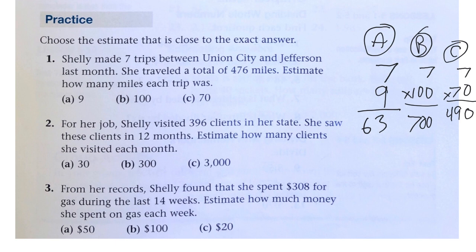So, which one's closest to 476? The answer would be C, about 70 miles each trip.